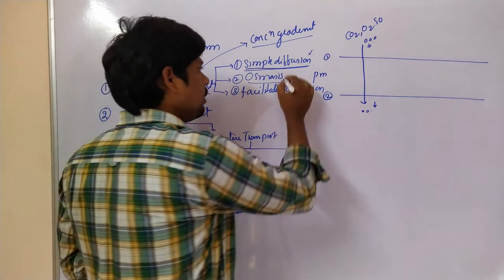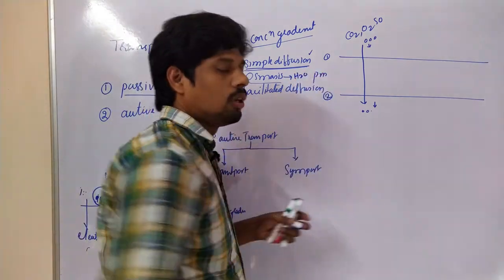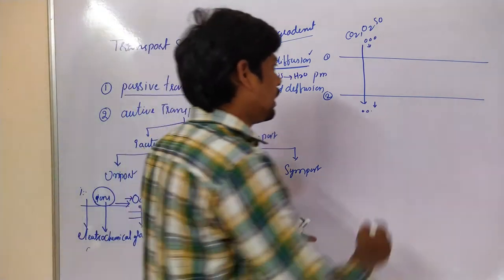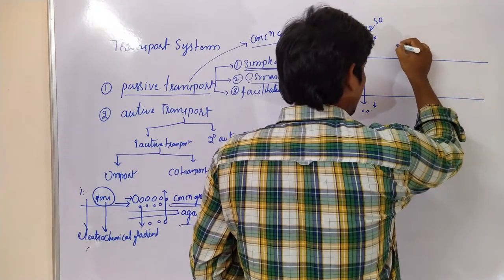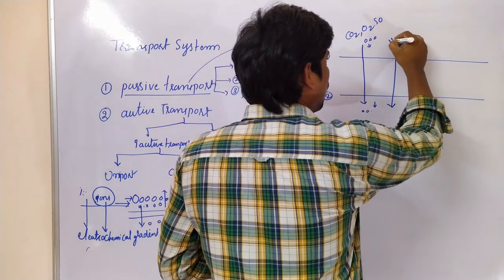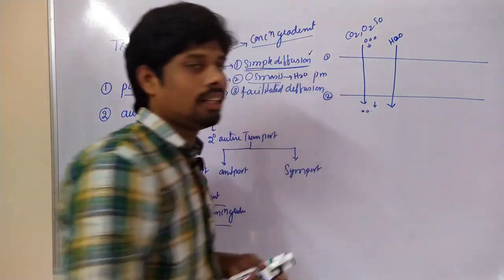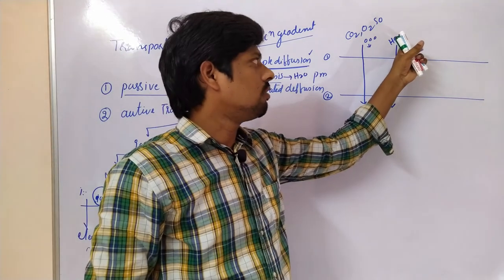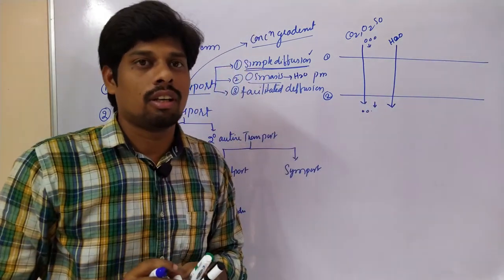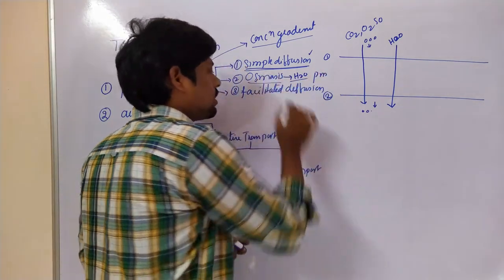Coming to osmosis. Osmosis occurs for water — a hydrophilic polar molecule. Osmosis of water can also occur through the plasma membrane according to the concentration gradient. It means water moves from a high concentration of water to a low concentration of water. That is called osmosis.